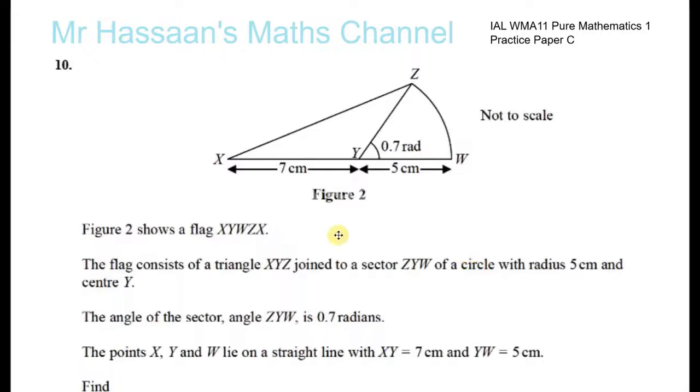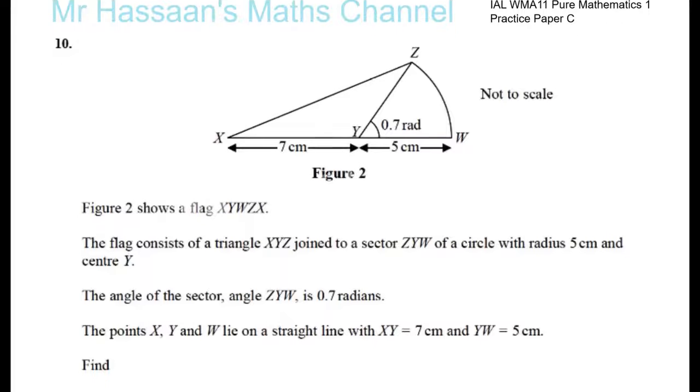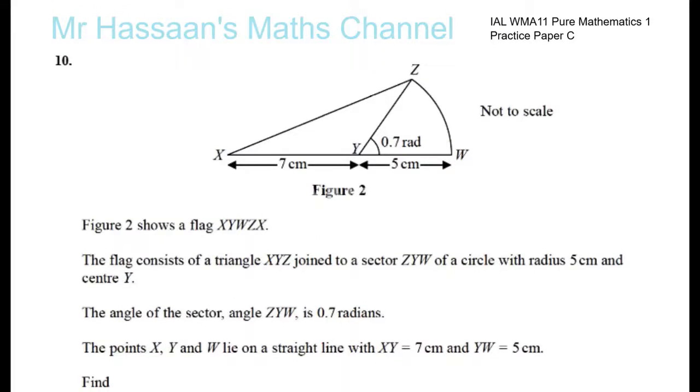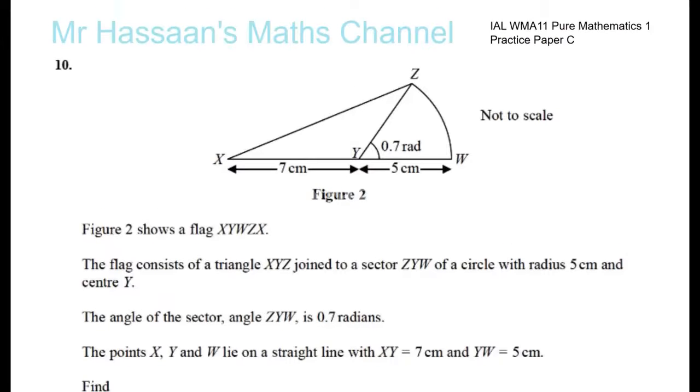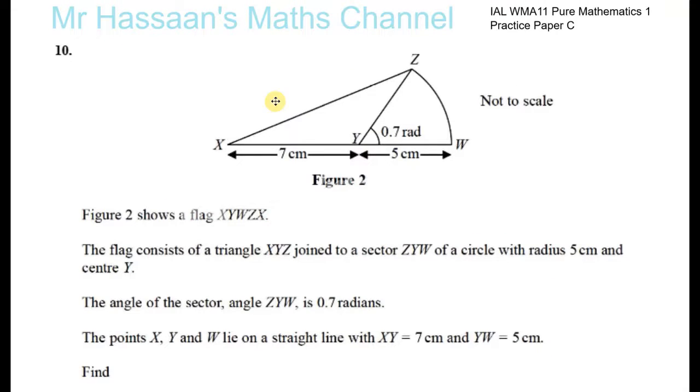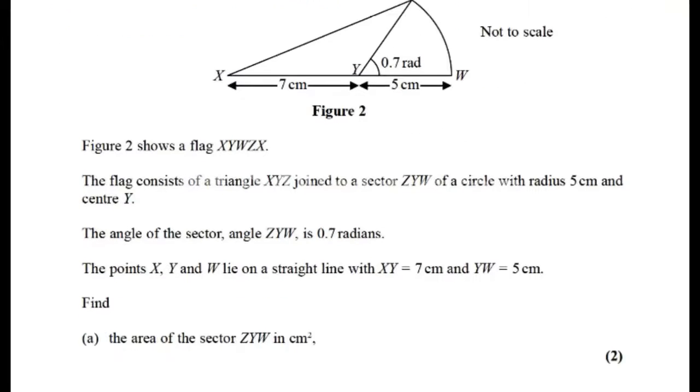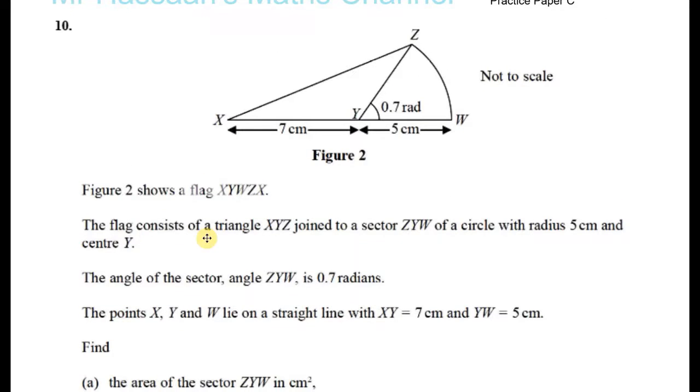Here we have the last question in practice paper C, IAL P1. We have a sector of a circle and a triangle stuck together as mentioned here, and we're asked to find the area of the sector. Let's see if there's anything important - the angle is in radians as shown.